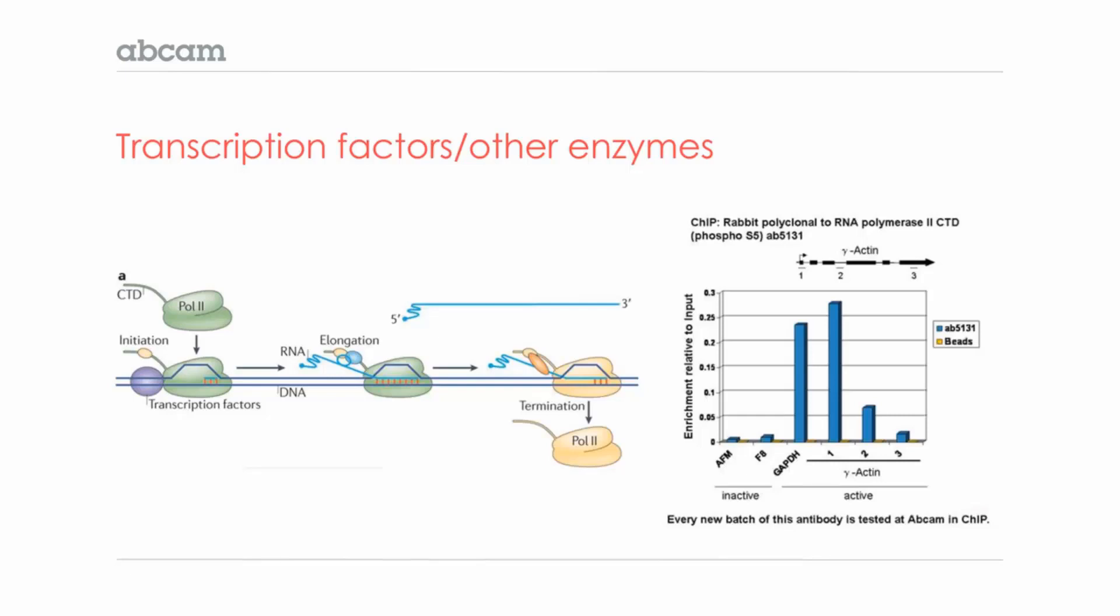On the right, I'm showing a ChIP experiment using an antibody specific for histone H3 when it's trimethylated at lysine 9. We find this modification present at inactive genes such as MyoD and serpina, as well as at heterochromatin, while you can see that it's mostly absent from active loci.